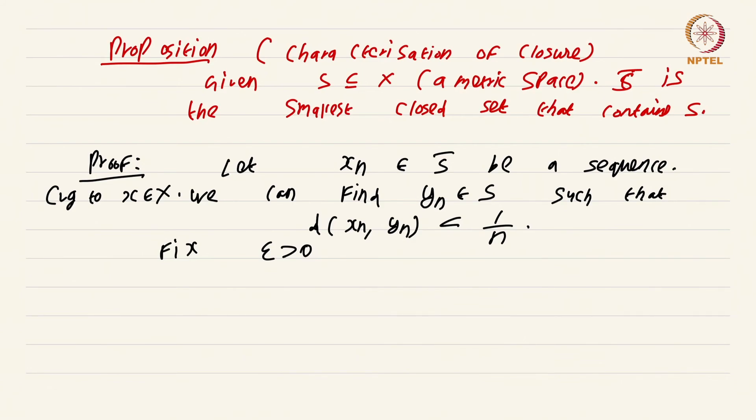So fix epsilon greater than 0. We can find n so large that simultaneously 1 by n is less than epsilon by 2 and d(x_n, x) is also less than epsilon by 2. Then a trivial application of the triangle inequality would tell you that d(y_n, x) is less than epsilon.